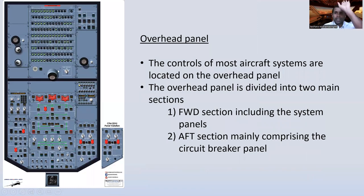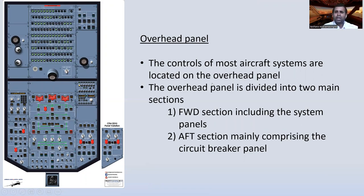This is the overhead panel — you can see it in the background. The controls of most aircraft systems are located on the overhead panel, including hydraulic systems and electrical systems.